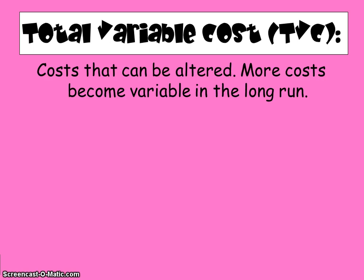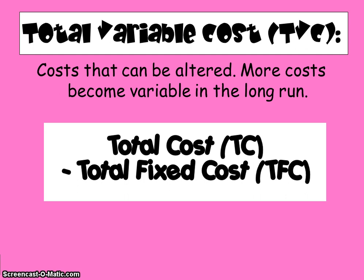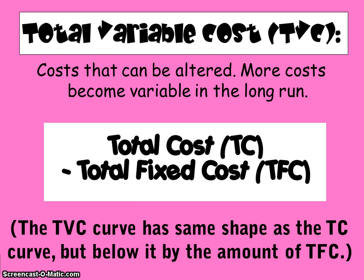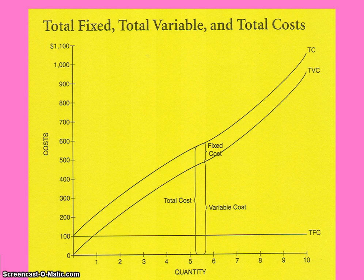Total variable costs are all the costs of production that vary — these are the costs that can be altered. In the short run, not all costs are variable, but in the long run they are. Variable costs are your total costs minus your fixed costs. The total variable cost curve has the same shape as the total cost curve but lies below it by the amount of the fixed costs. If the total fixed cost is $100, then total variable cost lies below total cost by $100 at any given level of output, and it will increase as output increases.